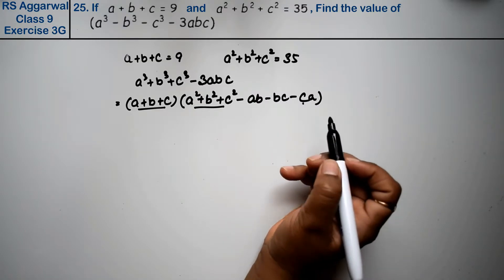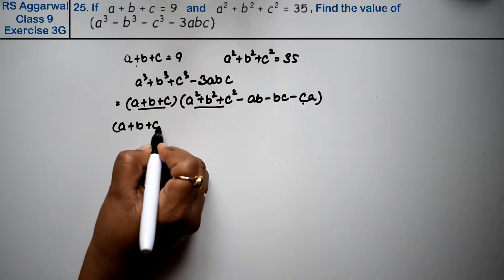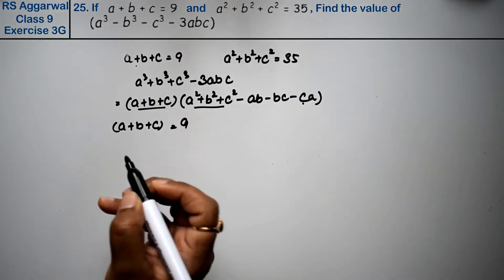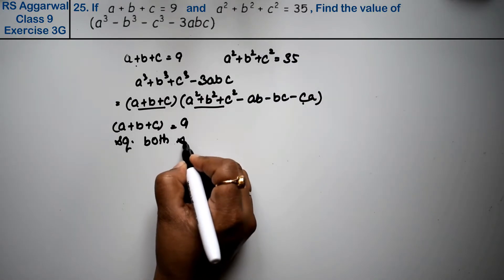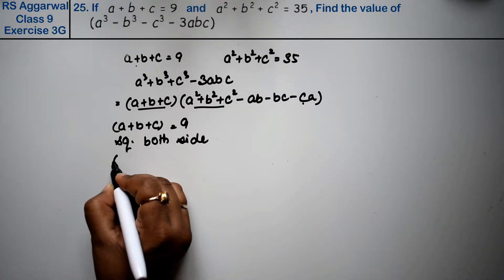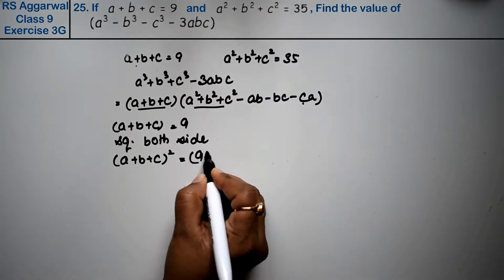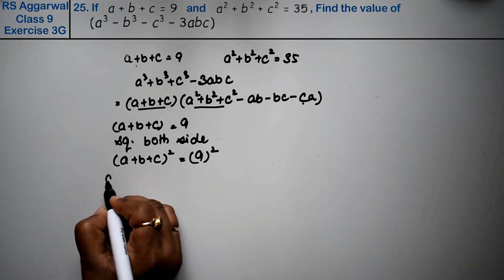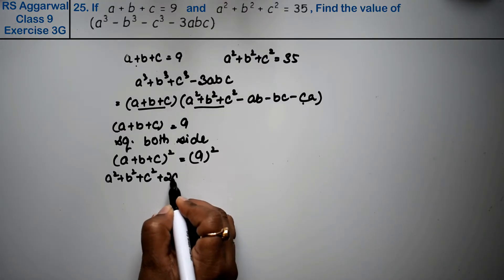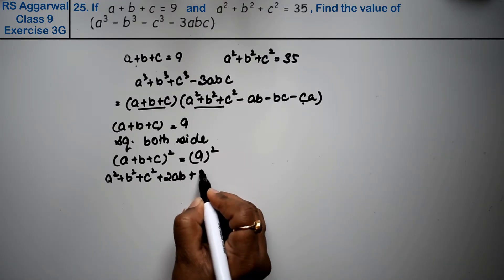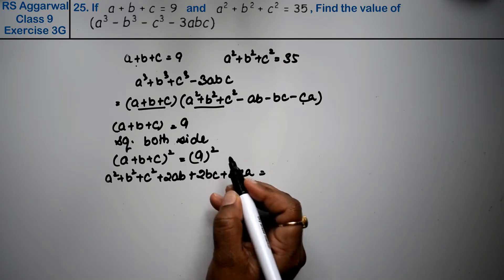How can we use this? If we take a plus b plus c equals 9 and square both sides, what happens? A plus b plus c whole squared equals 9 whole squared. So we get a squared plus b squared plus c squared plus 2ab plus 2bc plus 2ca equals 9 squared.